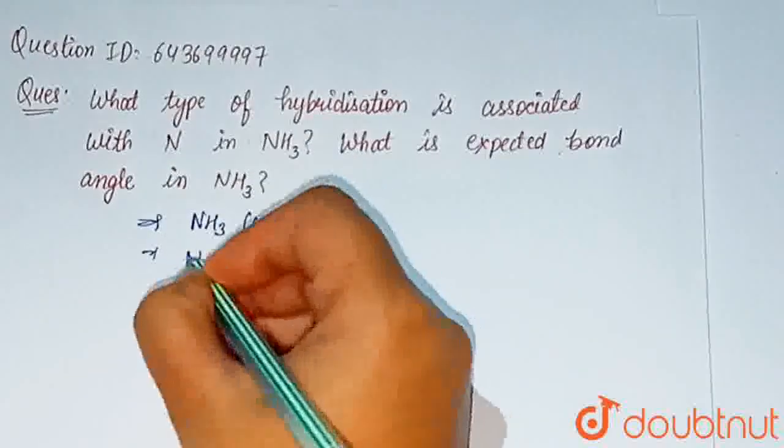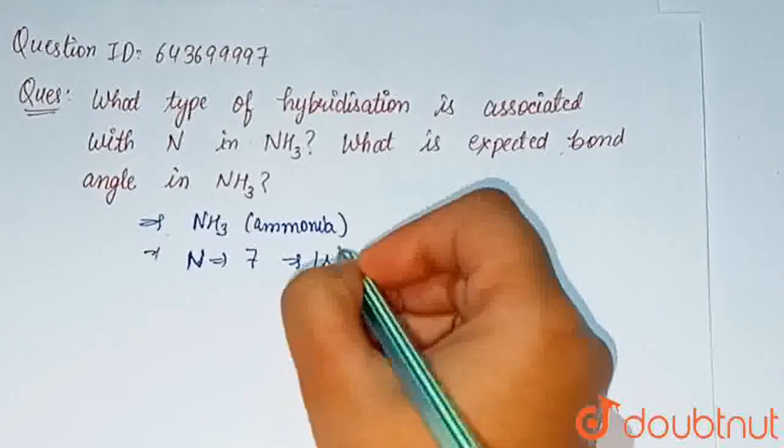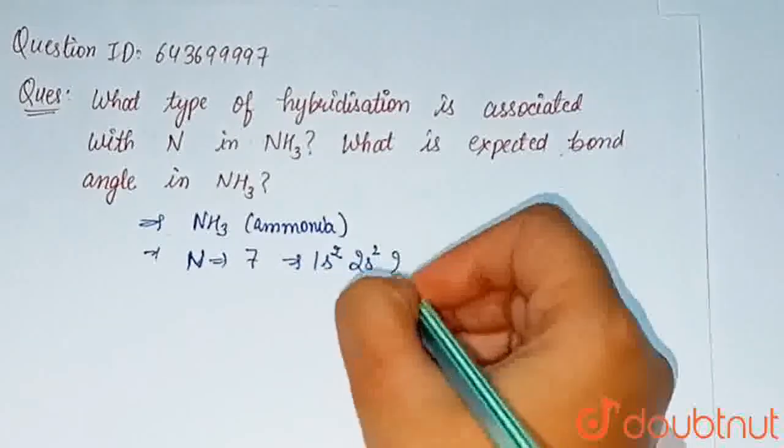Nitrogen atomic number is 7 and its electronic configuration is 1s2, 2s2 and 2p3.